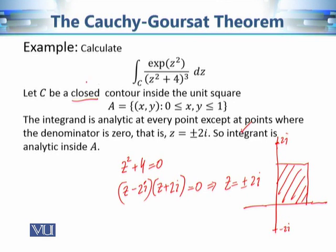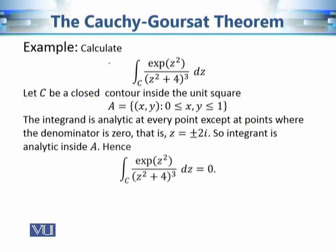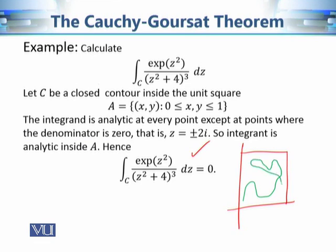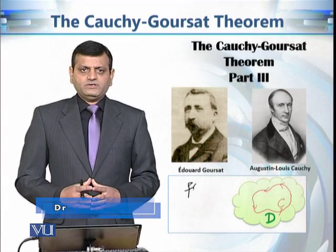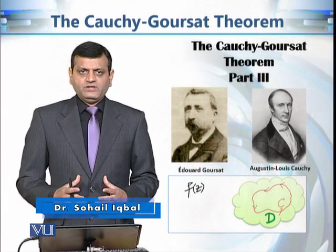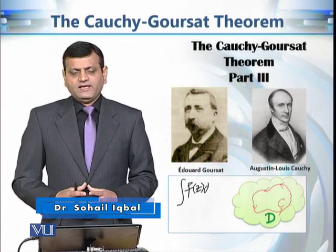Remember, we are not imposing the condition that c is simple. Hence, the contour integral is 0. So if you are inside the unit square, you can take any contour — as long as it is closed and contained in this square, the contour integral is going to be equal to 0. This is the end of our discussion on part 3 of the Cauchy-Goursat theorem and its generalization.